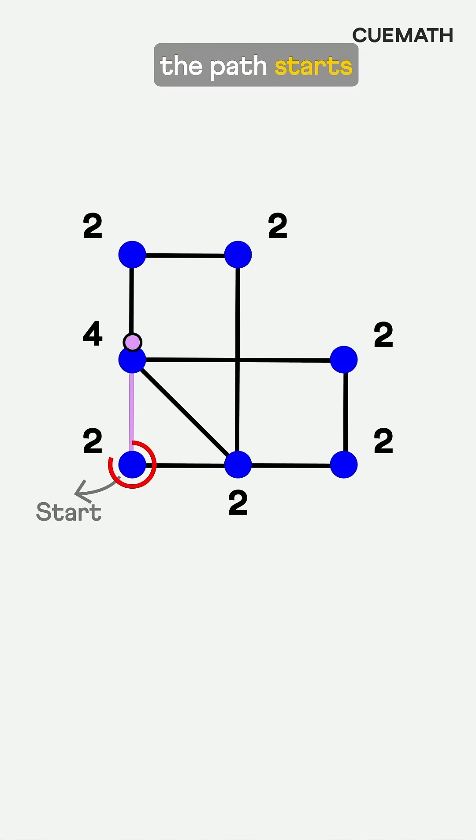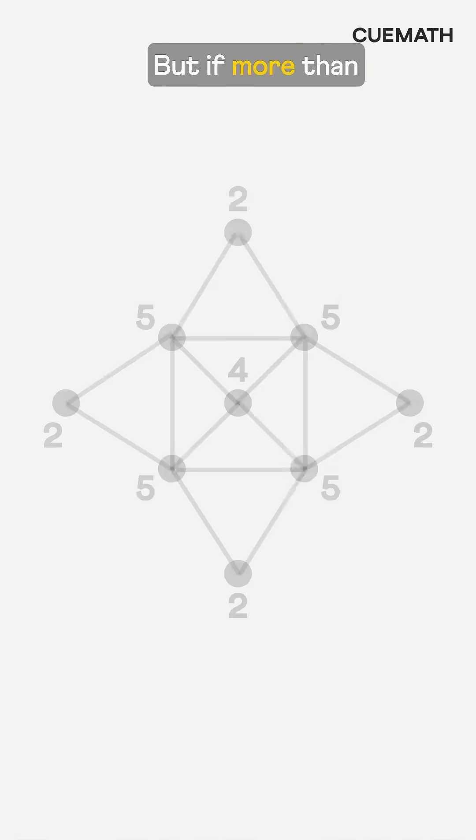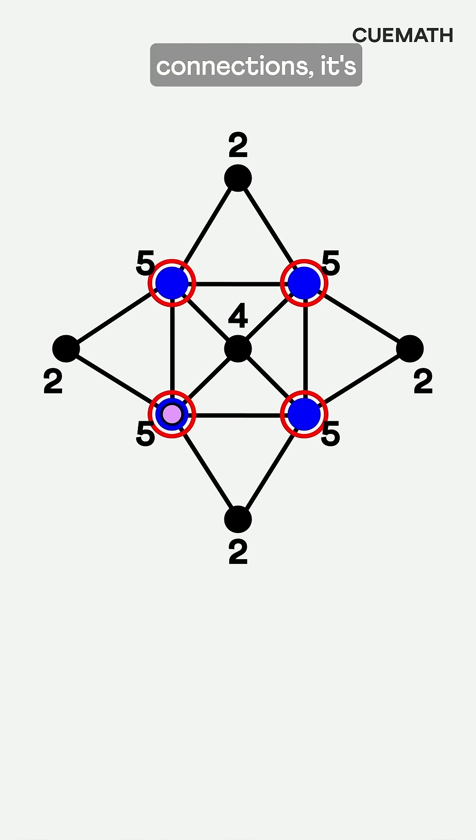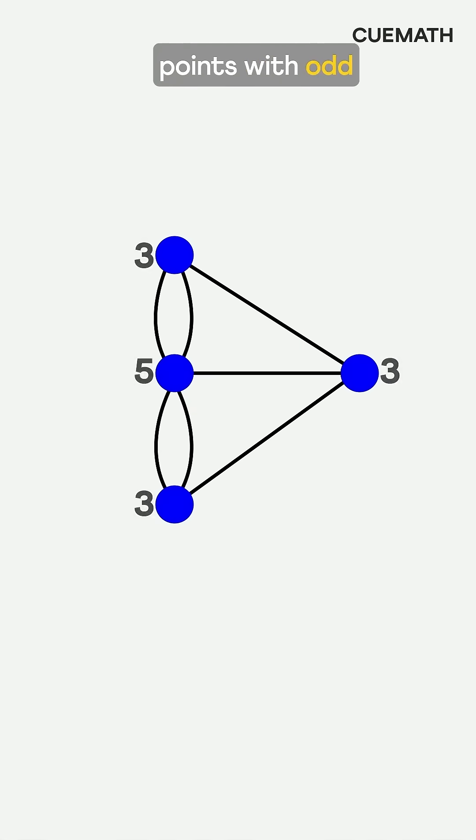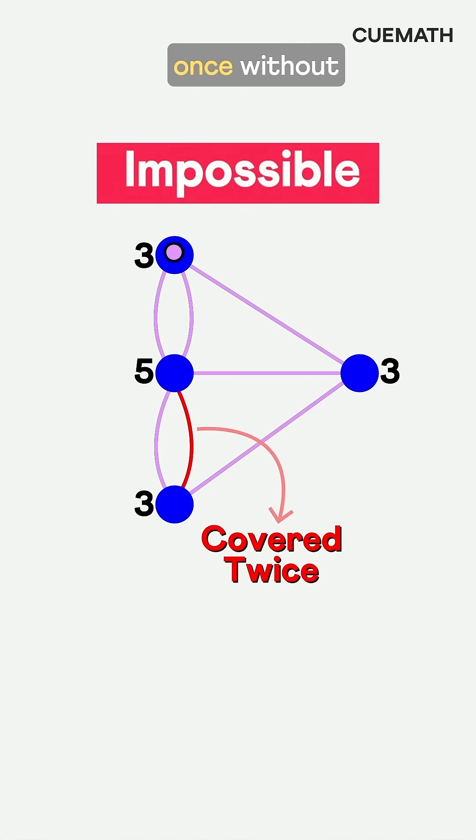If all are even, the path starts and ends at the same point. But if more than two points have odd connections, it's impossible to cover all lines without repeating. Königsberg had four points with odd connections, so Euler concluded it was impossible to cross the bridges once without repeating.